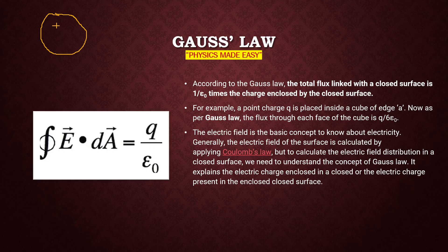In general, the electric field is a basic concept to know about electricity. We can calculate it by applying Coulomb's law, but to calculate the electric field distribution in a closed surface we need to understand Gauss law. It explains the electric charge enclosed in a closed surface. Gauss law is a basic law because Coulomb's law can be derived from it. In fact, both laws are not independent physical laws but the same law expressed in two different forms, and we can use them to find each other.